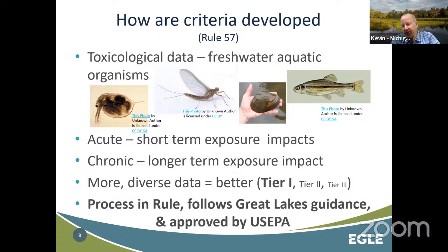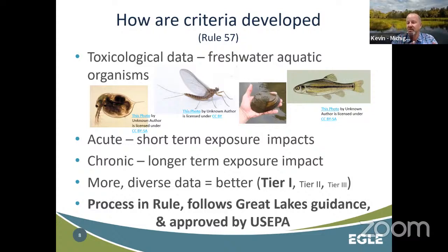In Michigan, this process is spelled out in our rules. All Great Lakes states should follow a Great Lakes guidance issued by US EPA that tried to coalesce the processes by which Great Lakes states and tribes protect their water resources and create a fairly level playing field. This process within Michigan is in our water quality standards rule and was approved by US EPA as the methods we can use to protect water quality in our state.